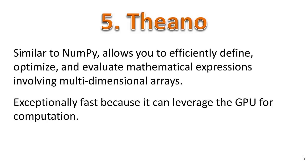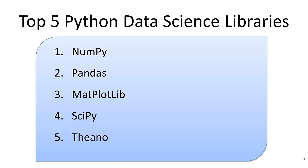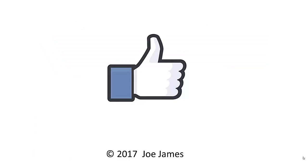Number five is Theano. It's similar to NumPy and supports multi-dimensional array operations. But Theano has a unique advantage — it is much faster because it can leverage GPUs for computation. And so these are the top five data science libraries for Python. I hope this video was helpful for you. If so, please click the thumbs up and subscribe to my channel. I'm Joe James — thanks for watching.